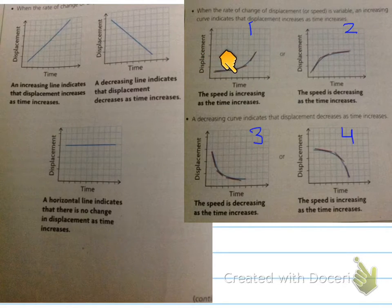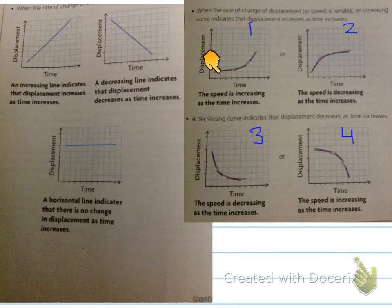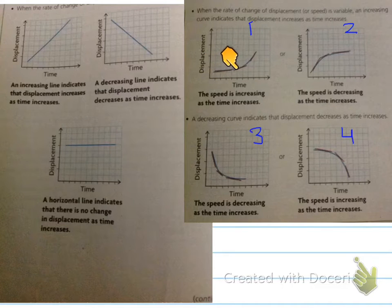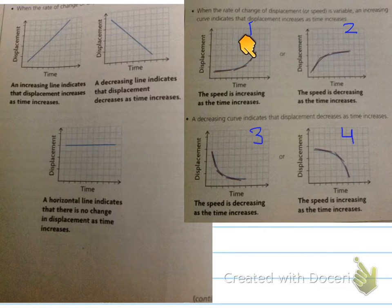Looking at the slopes of the tangent lines on this curve, what can you tell about the speed of this object? If you look at the slope, it starts horizontal and then gets more and more slanted. The steeper the line gets, the greater the slope. So what's happening here is the speed is increasing, because the slope is increasing on this curve. Remember, the slope of the tangent is the instantaneous speed.